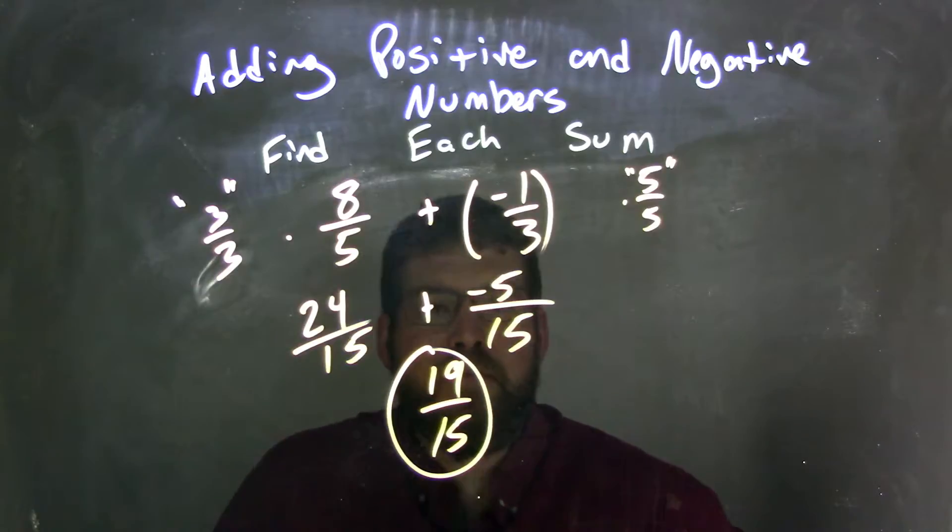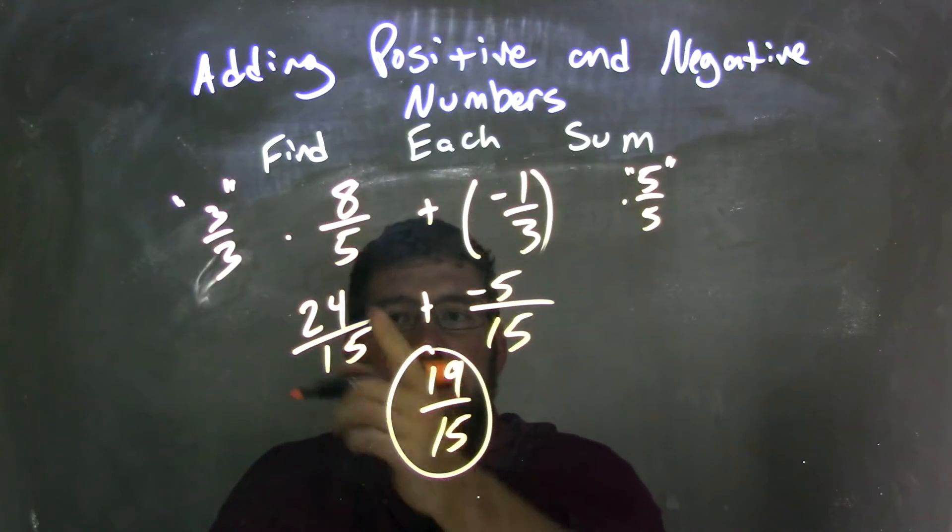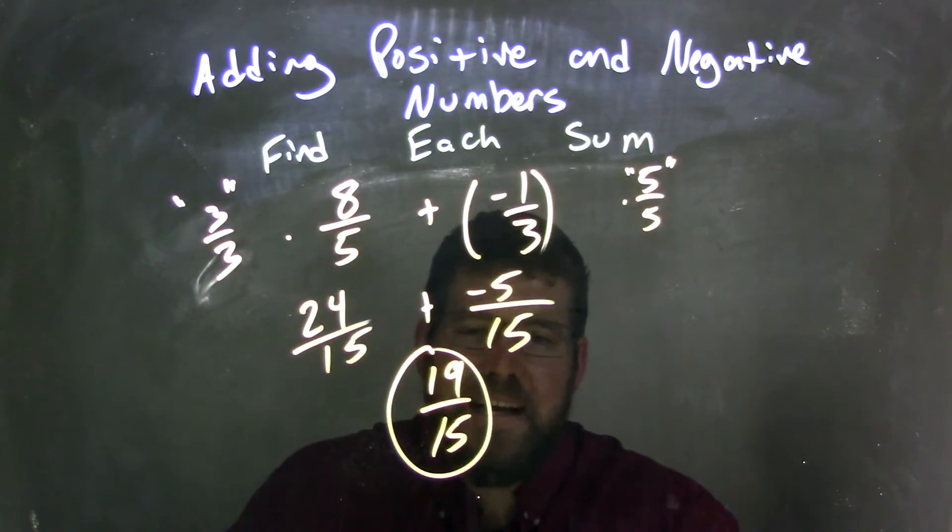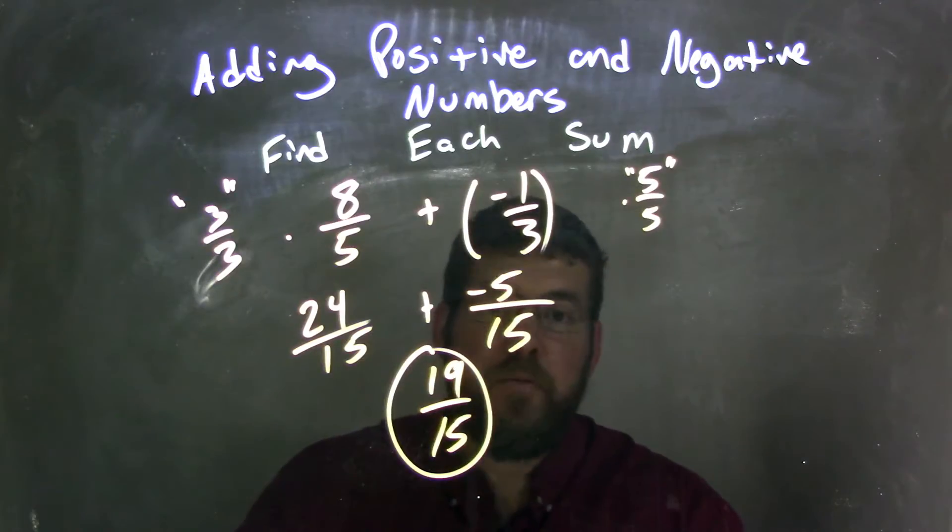And so now we're left with 24 over 15 and negative 5 over 15. We add these two together, keep the base the same. And 24 plus negative 5 is 19. And so 19 over 15 is my final answer.